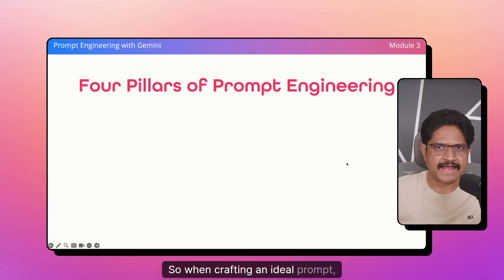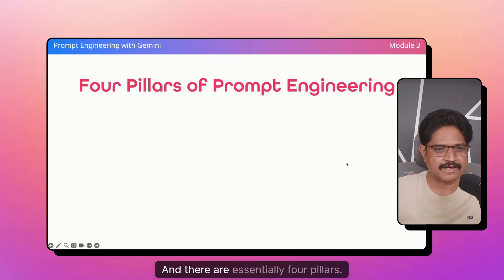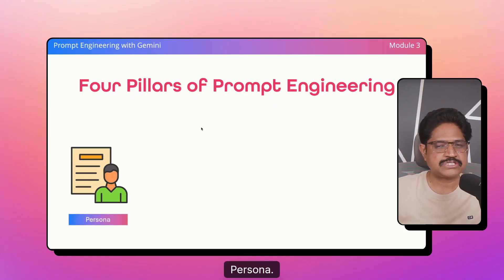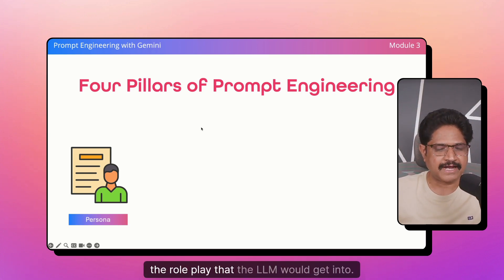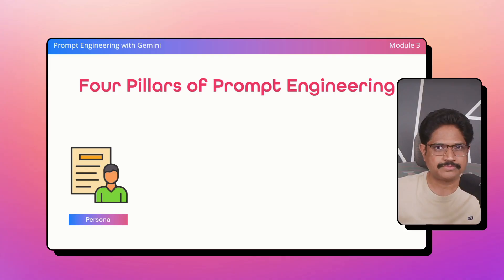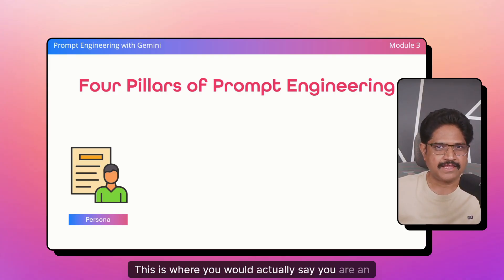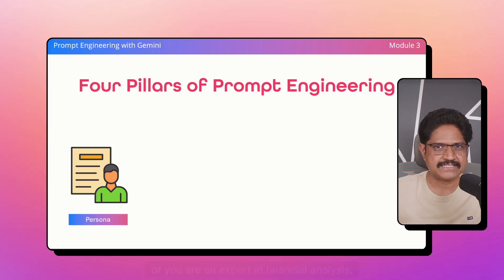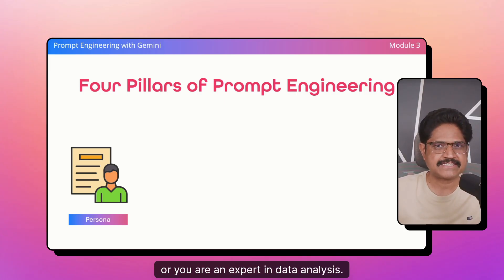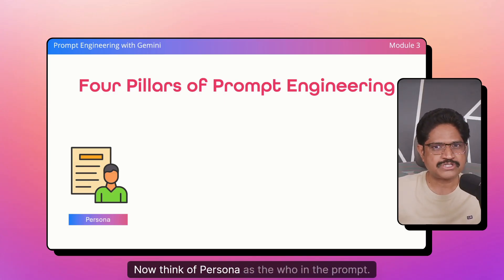When crafting an ideal prompt, you've got to remember the key pillars — there are essentially four pillars. The first one is the persona. The persona defines the role play that the LLM would get into. This is where you would say you are an expert in history, or you are an expert in financial analysis, or you are an expert in data analysis. Essentially, you will set the persona for the LLM. Think of persona as the who in the prompt.